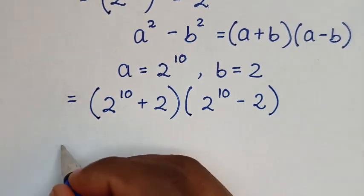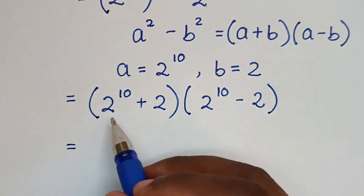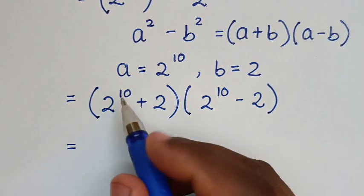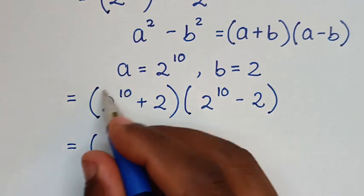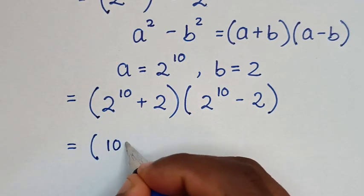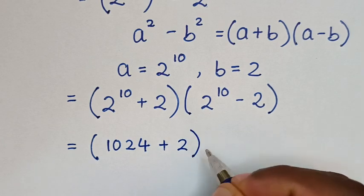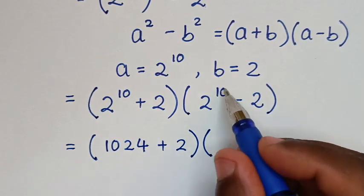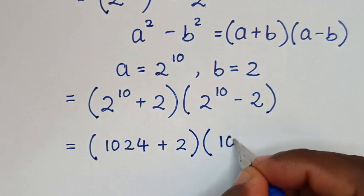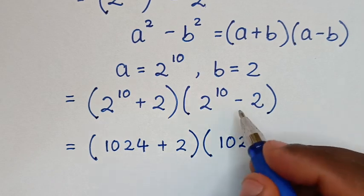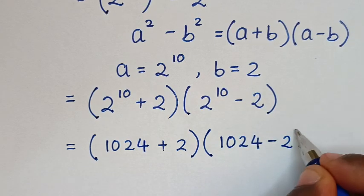Then it will be equal to, 2 to the power of 10 is 1024. So 1024 plus 2, times 1024 minus 2.